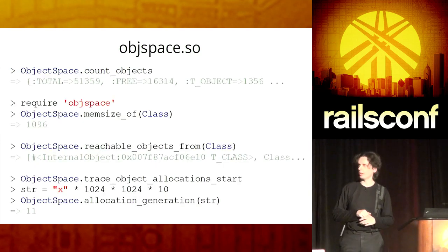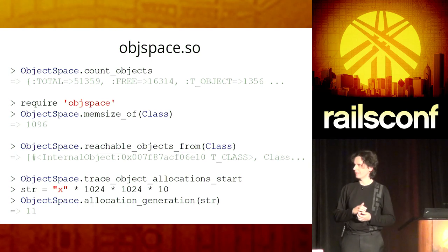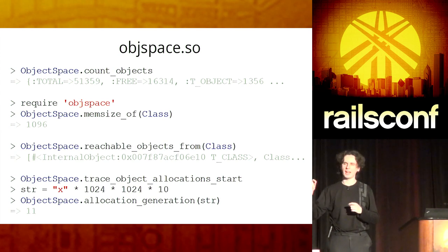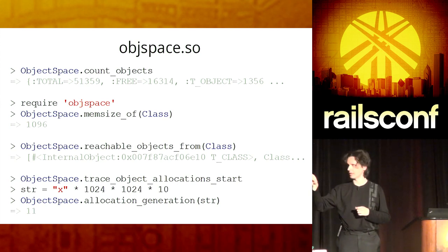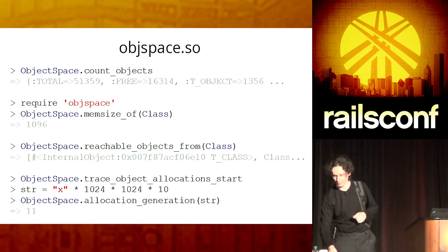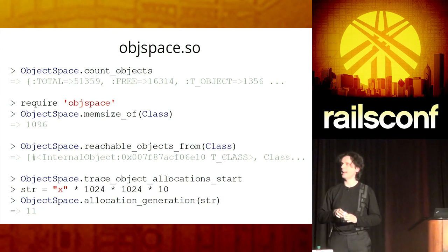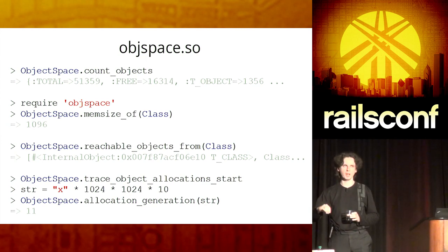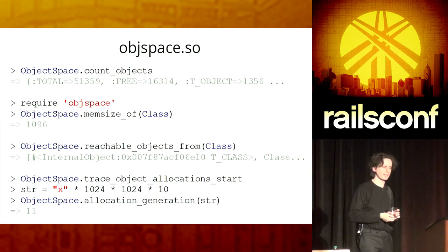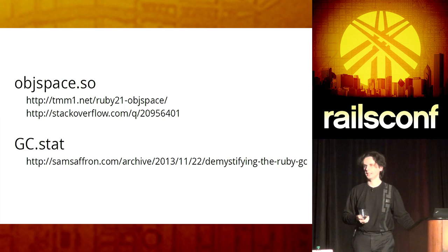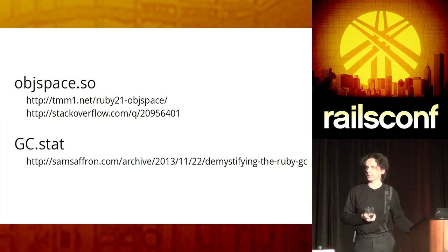Another less-known thing is ObjectSpace. You might know the ObjectSpace module, which has the count_objects function. But there is another extension of this which has functions to check the memory size of your objects. For example, the class object in Ruby actually uses more than 40 bytes of memory — it uses 40 bytes plus more than one kilobyte. ObjectSpace also has functions to trace reachable objects from your object. So if you're unsure what you reference and what you allocate, just use reachable_objects_from. It also has some tracing built in. If you want to learn more, here are some links, and I will tweet a link to this presentation so you can find it online later.